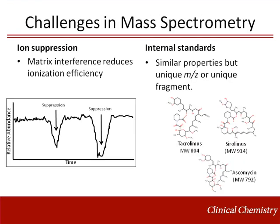Ion suppression occurs when something in the sample interferes with the ionization process of the analytes. For example, non-volatile or less volatile components found in the sample can inhibit proper droplet formation or efficiency of solvent evaporation. One method for determining ion suppression is a T-infusion experiment: analyte is infused into the mass spectrometer at a constant rate while a sample that does not contain the analyte, but is an appropriate matrix match, is injected. The sample tracing should be a constant line in the absence of ion suppression, but the relative abundance will appear to drop when ion suppression is occurring. Better sample preparation and improved chromatography are two possible solutions to reduce ion suppression.